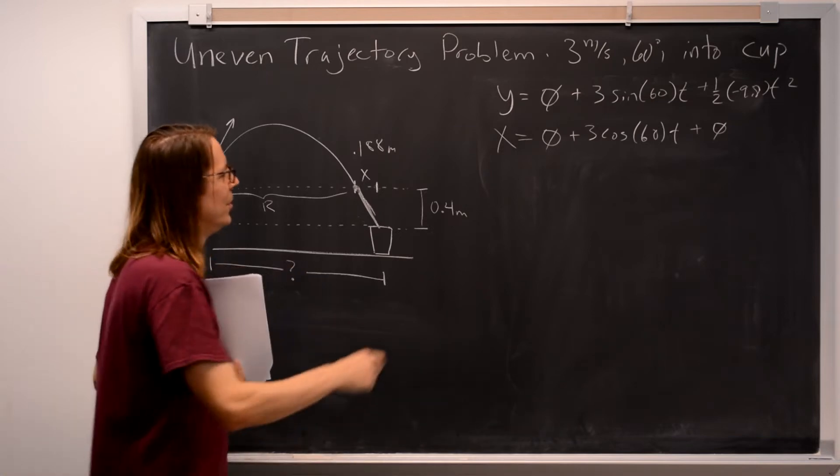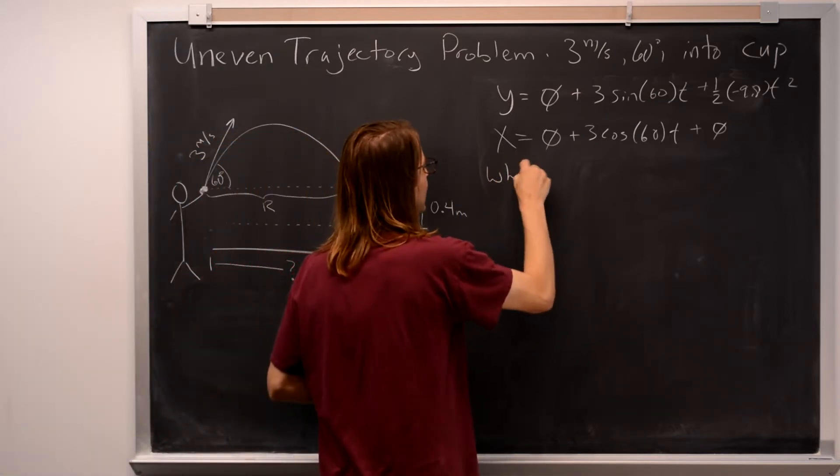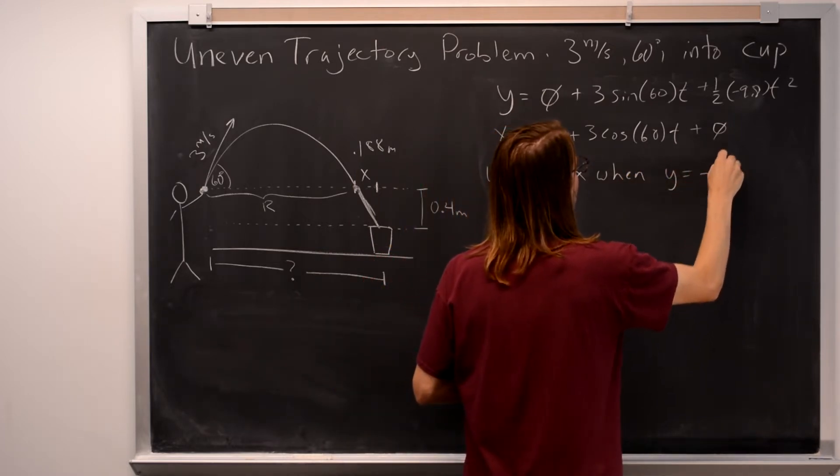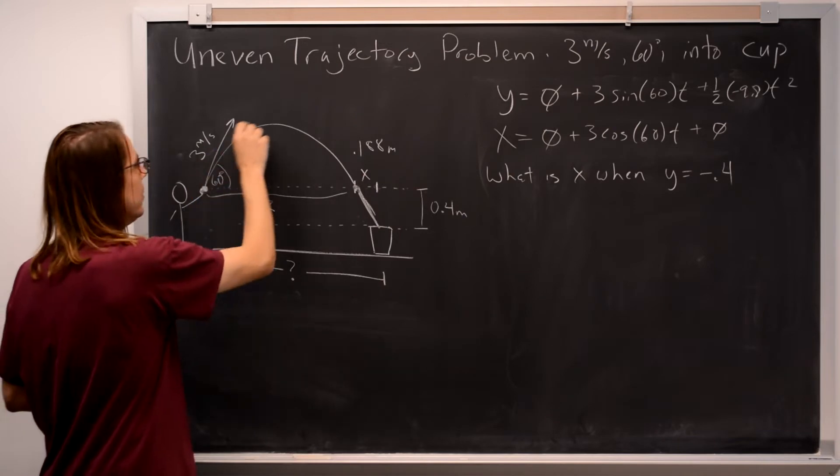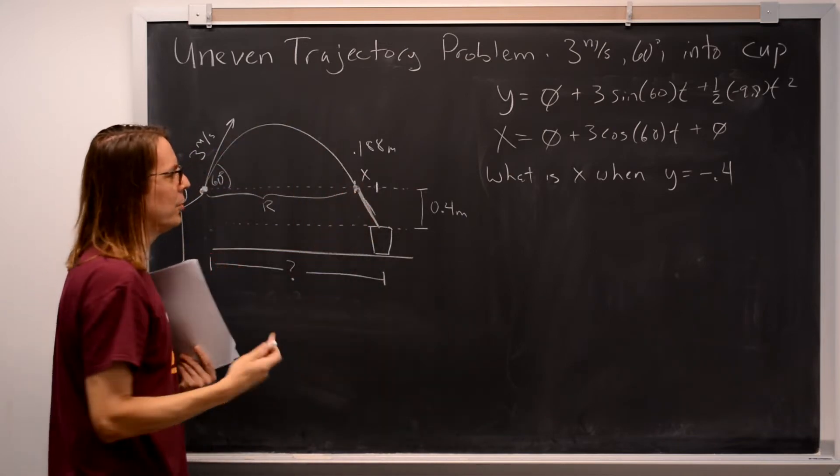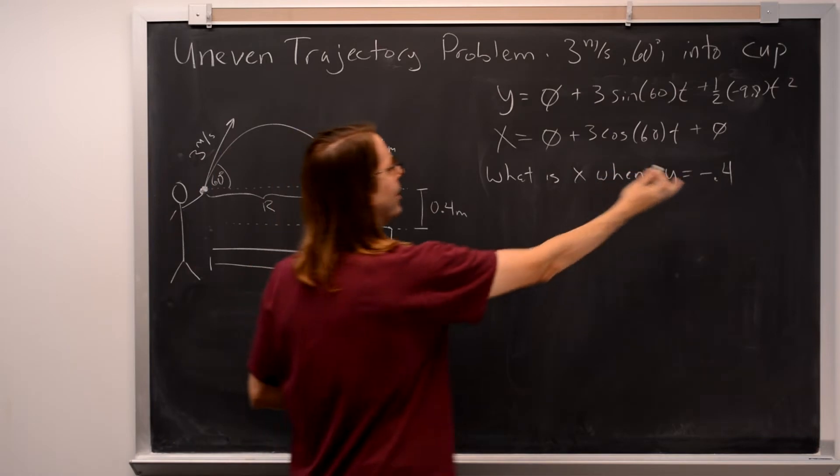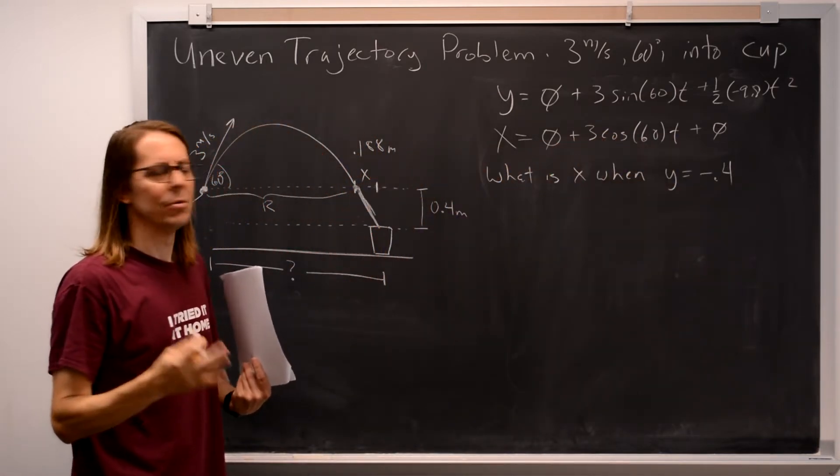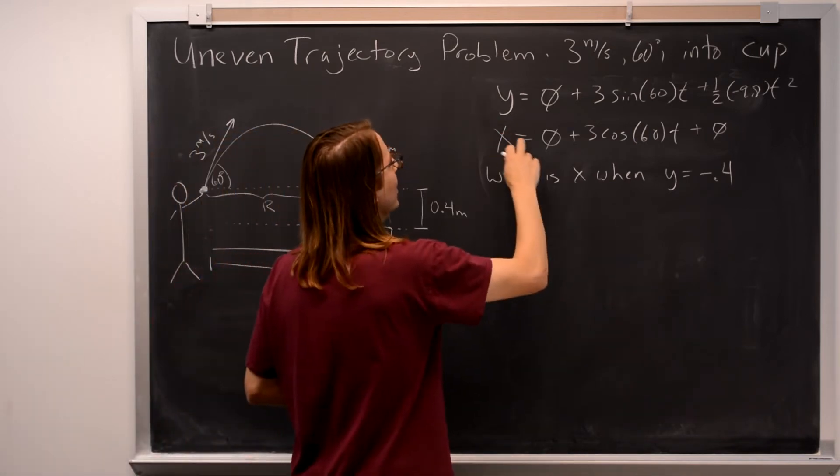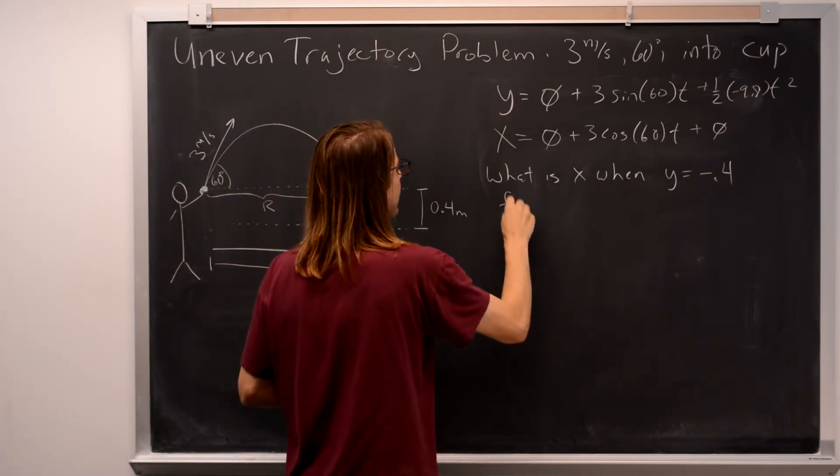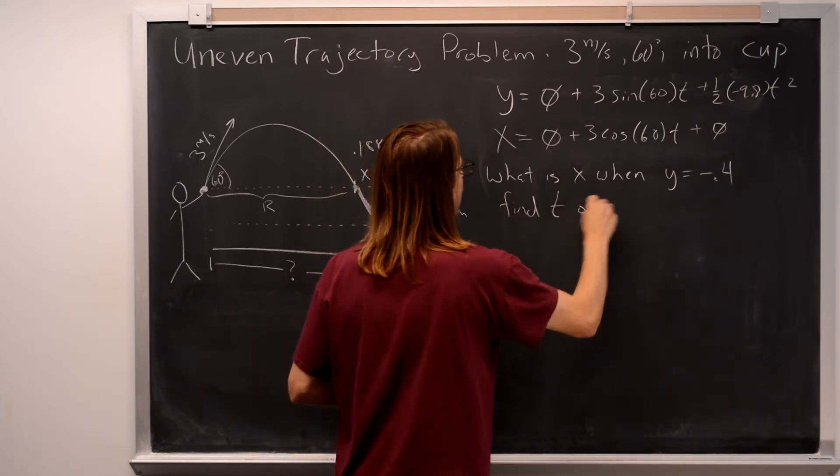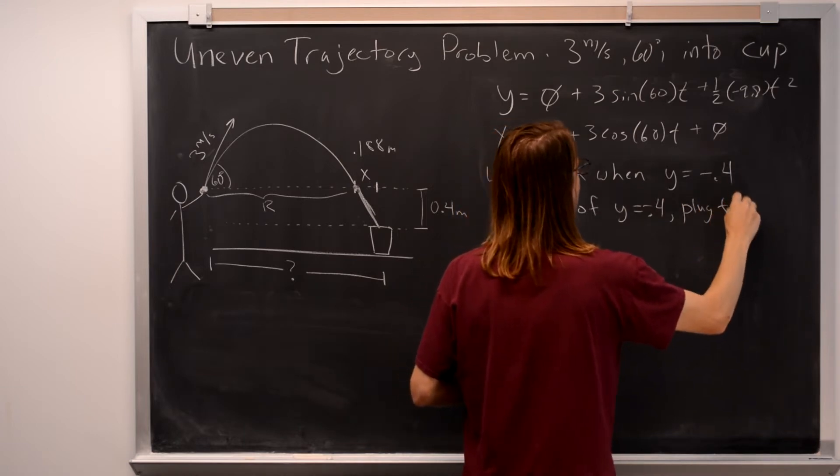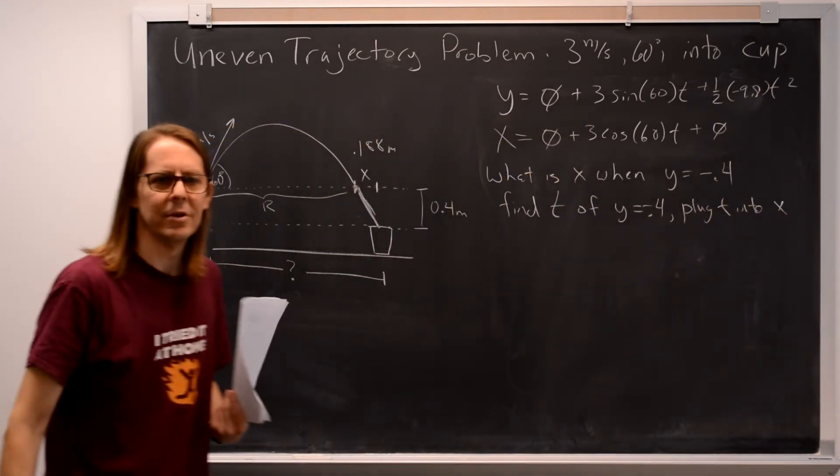So really, then, we just have to answer the question of what is x when y equals minus 0.4? So we have this thing fly along, and when y is minus 0.4, what is x? All we've got to do. Well, you say, let's plug in minus 0.4 into this equation. Oh, it's not in here. So they're coupled by time. What we really have to do is find the time. Find the time of y equals minus 0.4 and plug t into x.